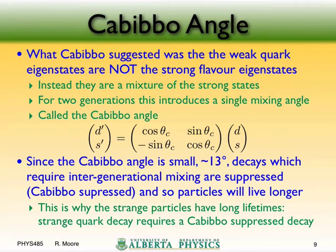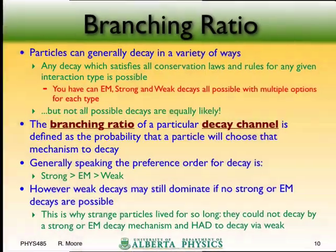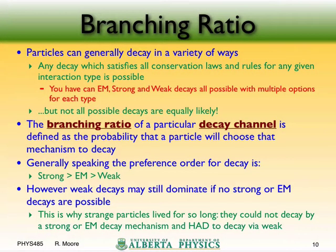Decays involving an up to a strange or a charm to a down are Cabibbo suppressed. Those cases are suppressed not just by the weak force — which already makes particles live longer — but also by the fact that you're coupling a strange quark to an up quark via a W boson. So when it comes to K-on lifetimes, it's suppressed both by the large W mass and by the Cabibbo suppression factor, which is why these particles have very long lifetimes.